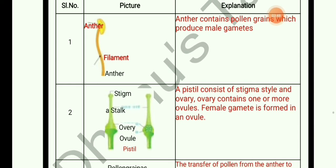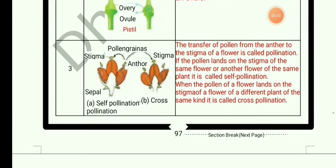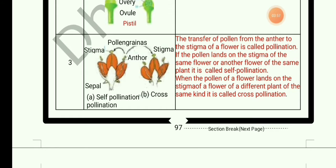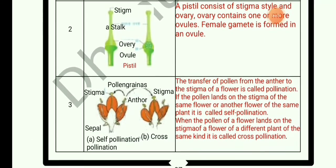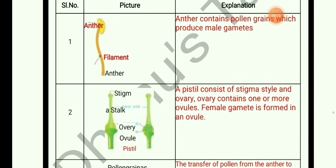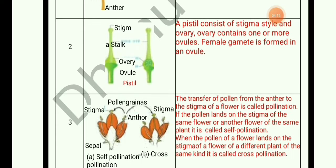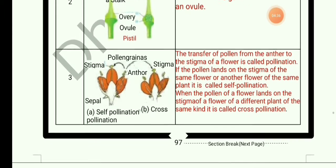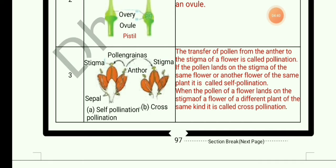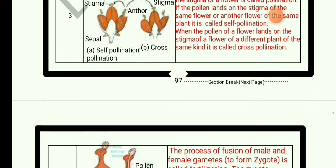Stamen is the male part of a flower and pistil is the female part. Pollination is the transfer of pollen from the anther to the stigma of a flower. Self-pollination is when pollen lands on the stigma of the same flower or another flower of the same plant. Cross-pollination is when pollen of a flower lands on the stigma of a flower of a different plant of the same kind.